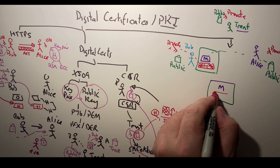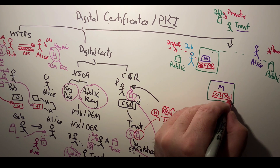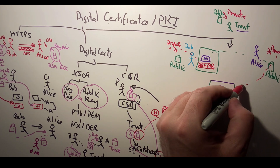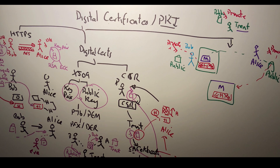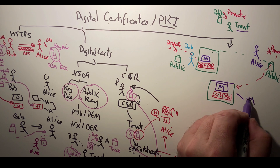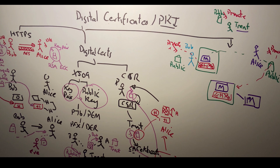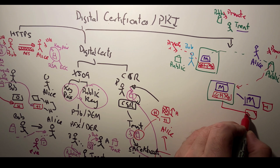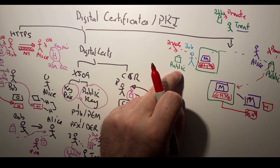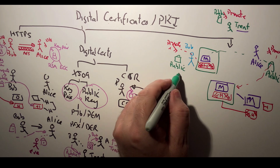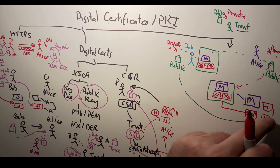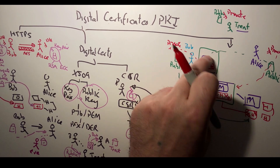We send the message over — inside we have the message and the signed hash. Alice will then take her private key and be able to decrypt the encrypted message with her private key, giving her the message. Next, she'll take a hash of the message and then decrypt the encrypted hash with Bob's public key. She'll end up with two hashes, and if they're the same then she knows that Bob was the one that signed the hash.